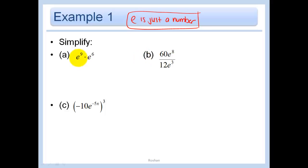e is not a variable, it's nothing funky. It is a number approximated by 2.71828, just like pi is a number approximated by 3.14. So here when I'm doing e^9 times e^6, that's no different than saying what was 2^9 times 2^6. We had the same basis, so we added exponents. We got 2^15. Same basis, add the exponents, e^15.